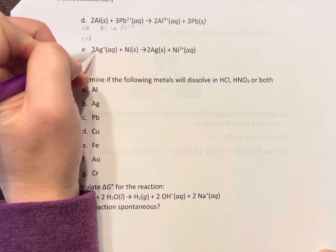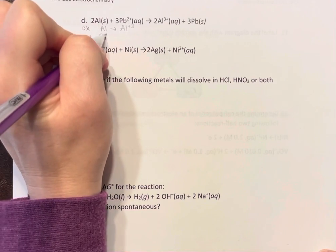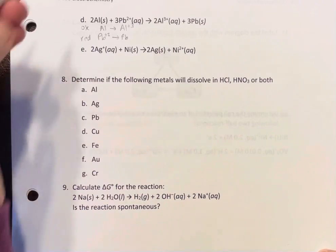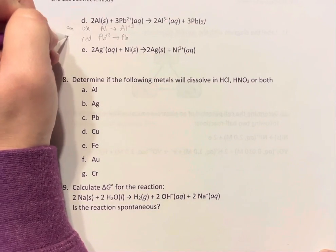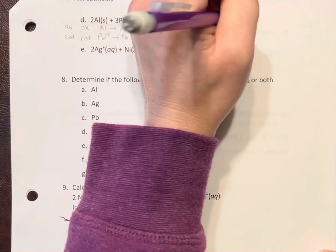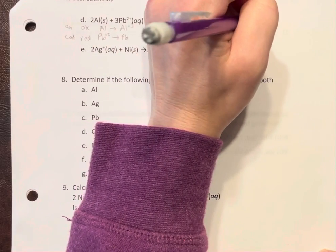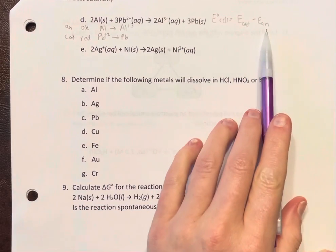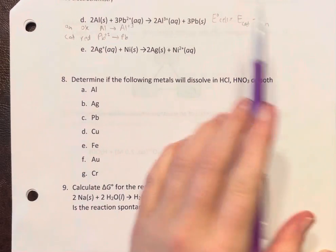And our reduction is going to be lead two plus to lead. You also want to be careful because remember lead can also be plus four. Write our standard equation here: E cathode minus E anode. Think about the end being a negative, so sort of how I remember that.